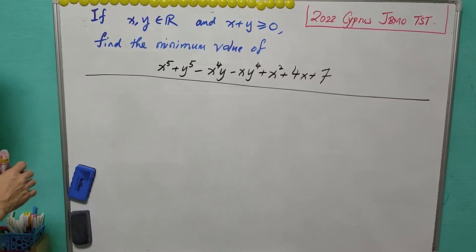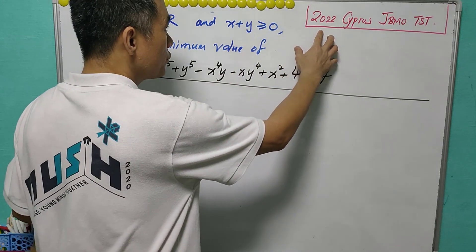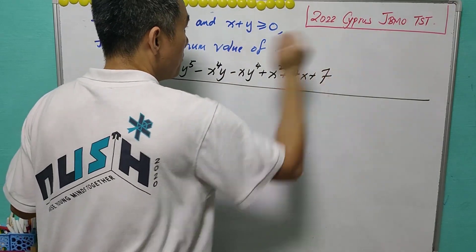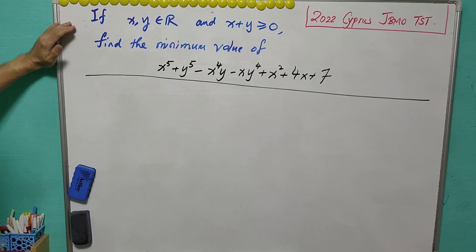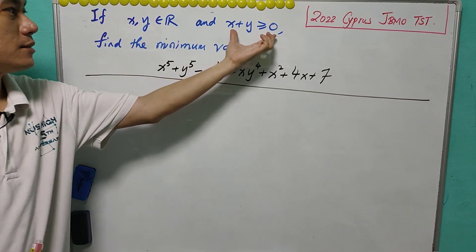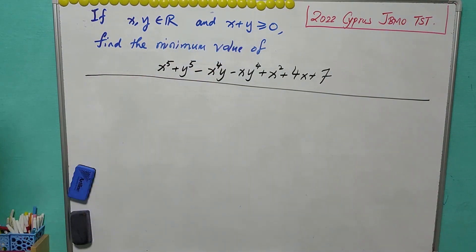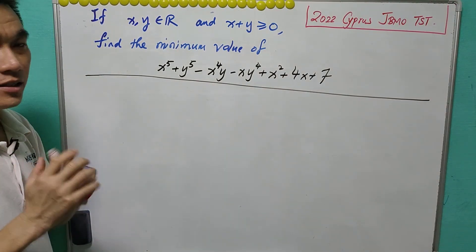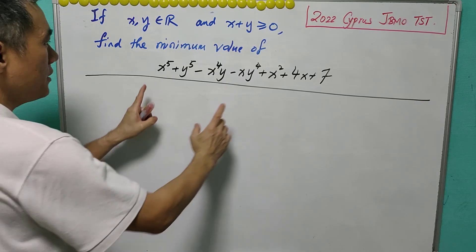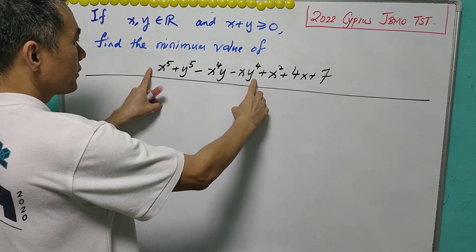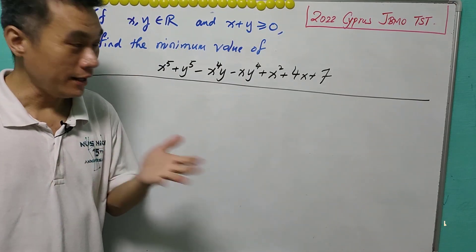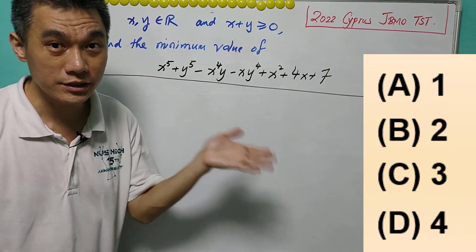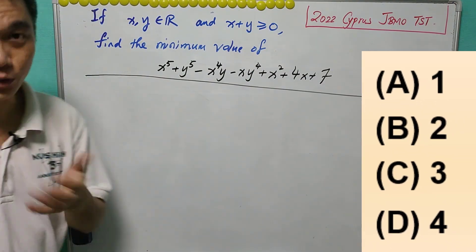For today's question, we are going to discuss this 2022 Cyprus JVMO team selection test. Given that x, y are real numbers such that the sum is at least zero, we are asked to find the minimum value for this expression. The key step of solving this question is looking at the first four terms here. And the options for the answer are A, 1, B, 2, C, 3 and D, 4. What do you think?